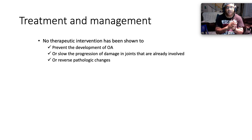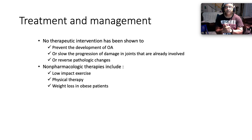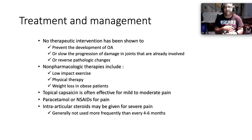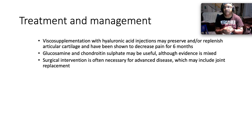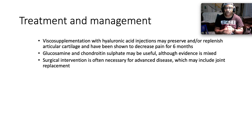There is no therapeutic intervention shown to prevent the development of OA, slow down joint damage, or reverse the pathophysiological process. Non-pharmacological therapies include low-impact exercise, physical therapy, and weight loss in obese patients. Topical capsaicin is often effective for mild to moderate pain. Paracetamol or non-steroidals are used for pain. Intra-articular steroids may be given for severe pain but generally not more frequently than every four to six months. Viscous supplementation with hyaluronic acid injections may preserve articular cartilage and decrease pain for about six months. Glucosamine and chondroitin sulfate may be useful, though the evidence is mixed. Surgical intervention including joint replacement is often necessary for advanced disease.